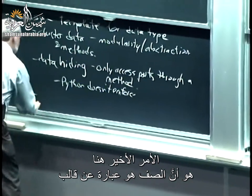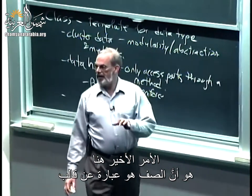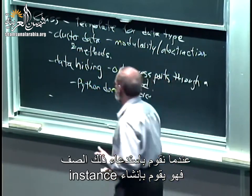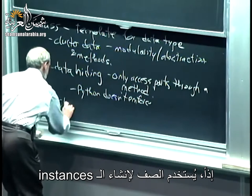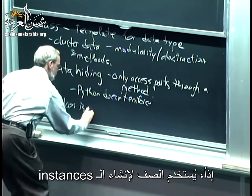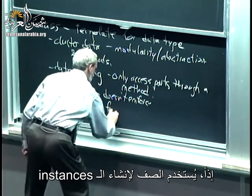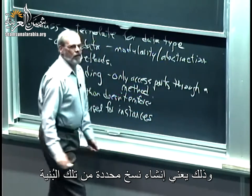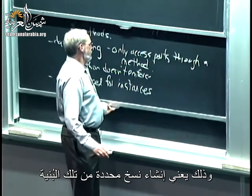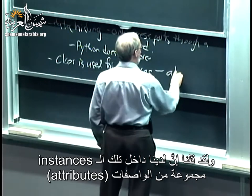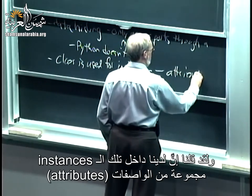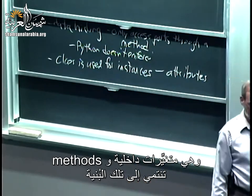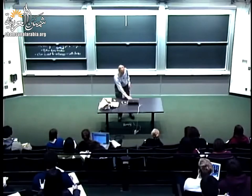The last piece is that the class is a template. When we call that class, it makes an instance. So the class is used to make instances — particular versions of that structure. Inside the instances, we have a set of attributes: internal variables and methods that are going to belong to that structure.